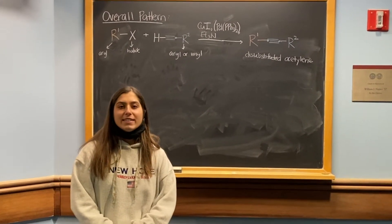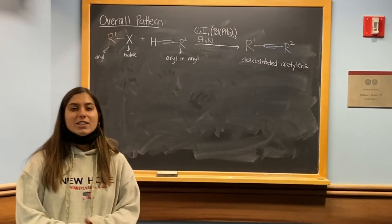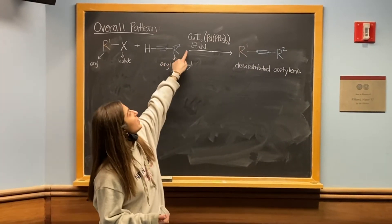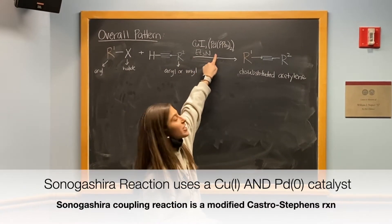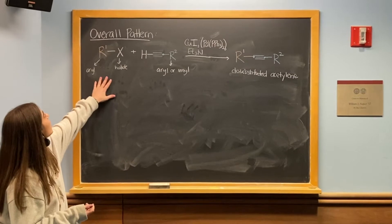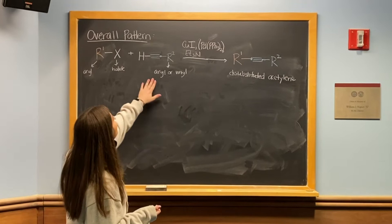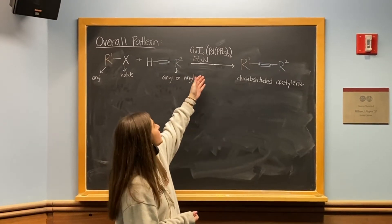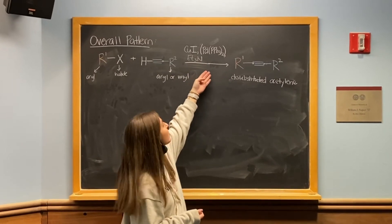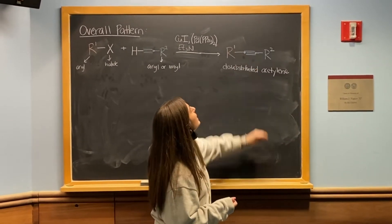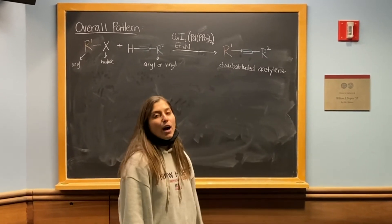I'm going to be talking about the Castro-Stevens and Sonogashira coupling reactions. These are both organometallic reactions. The biggest difference is that the Castro-Stevens reaction uses only a copper catalyst, but the Sonogashira reaction uses not only a copper catalyst but also a palladium catalyst, so there are two catalytic cycles. The overall pattern is that you have one R group that's an aryl bonded to a halide, and then a terminal alkyne with an aryl or vinyl R group at the end. Under basic conditions, we form a disubstituted acetylene product with a new carbon-carbon bond, and the byproduct is a copper halide.